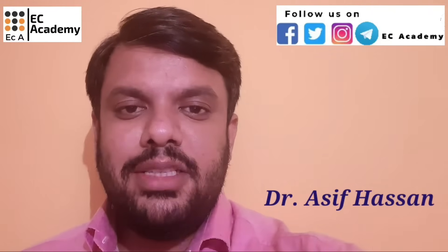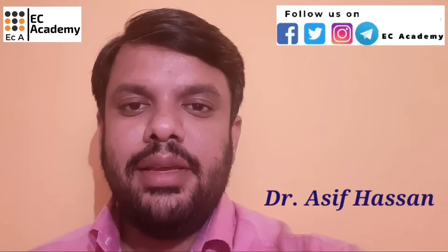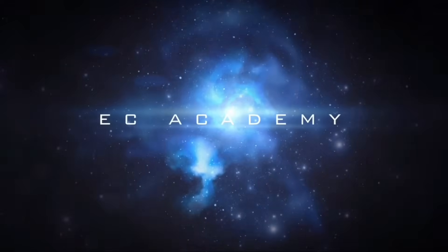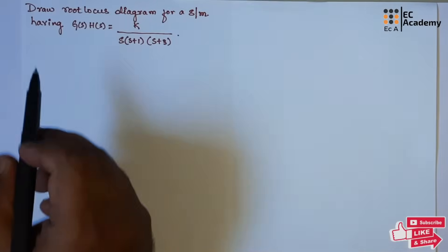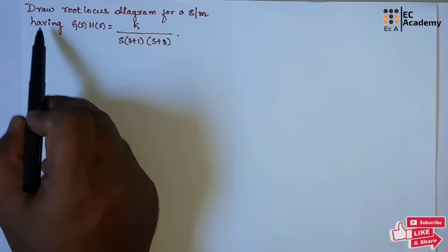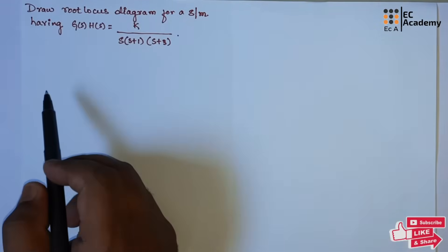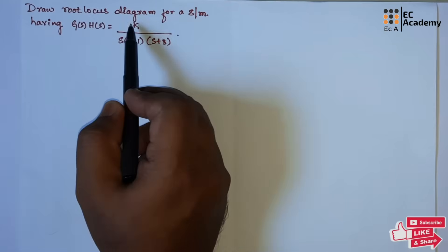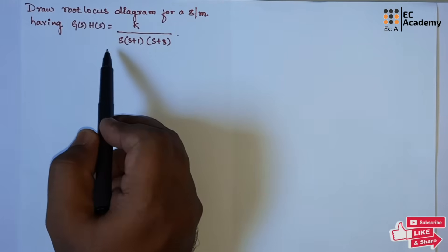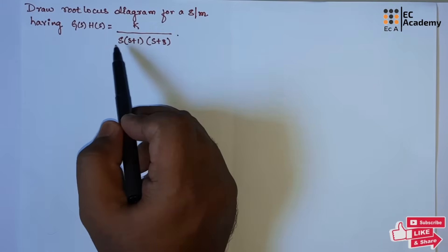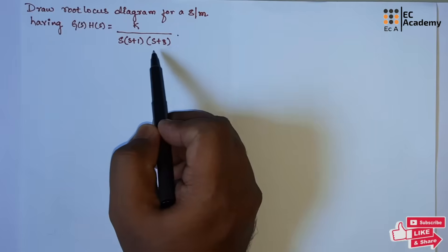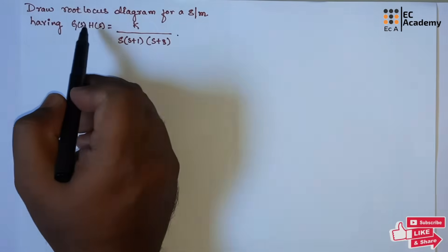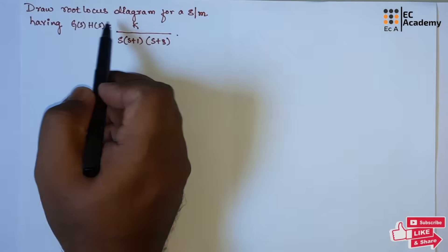Hello friends, welcome to EECA Academy. In this lecture, let us understand a problem on root locus. We need to draw the root locus diagram for the system with transfer function k divided by s into s plus 1 into s plus 3. For this transfer function, we need to find the root locus diagram.